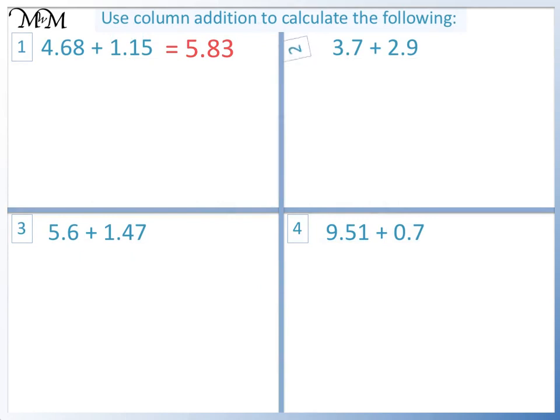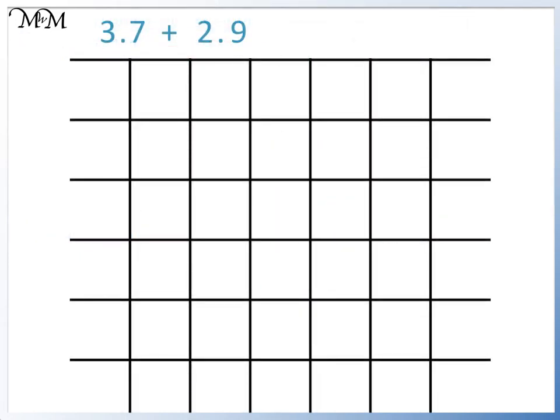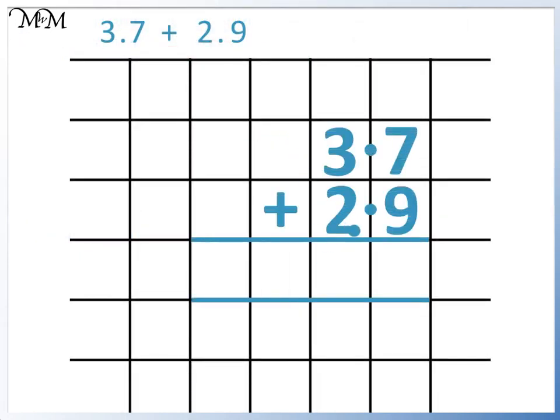Question 2: 3.7 plus 2.9. 7 plus 9 equals 16. 3 plus 2 equals 5, plus 1 equals 6. The answer is 6.6.